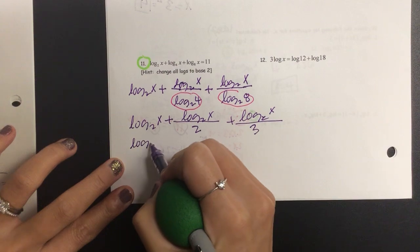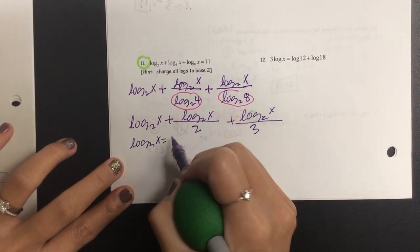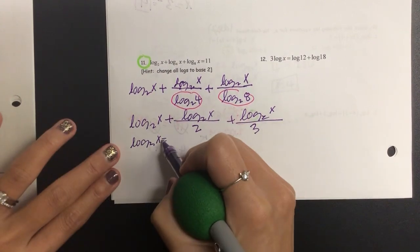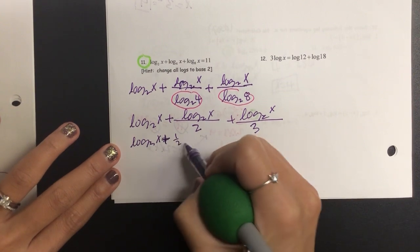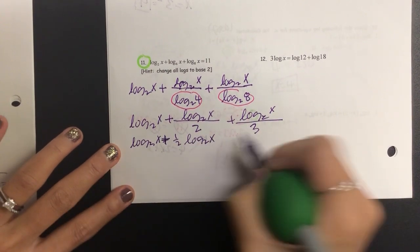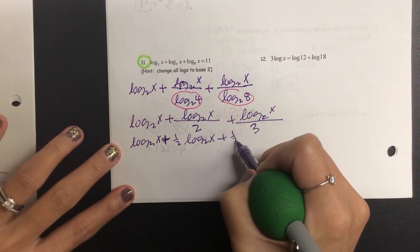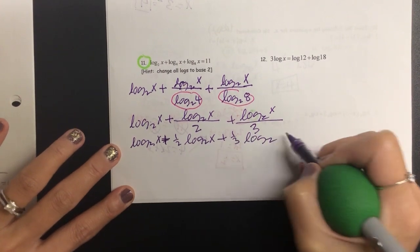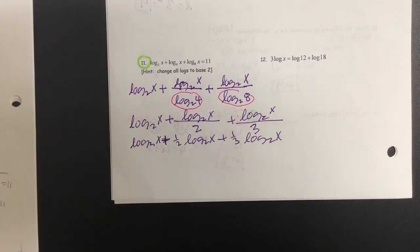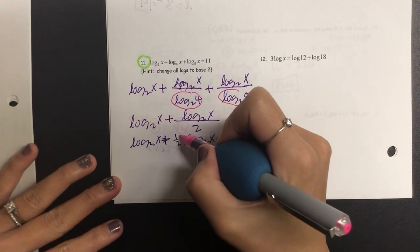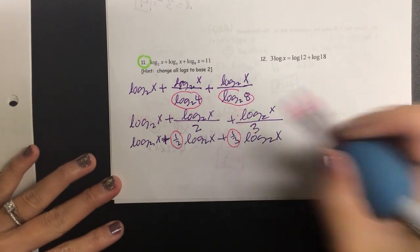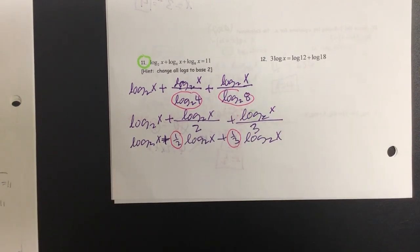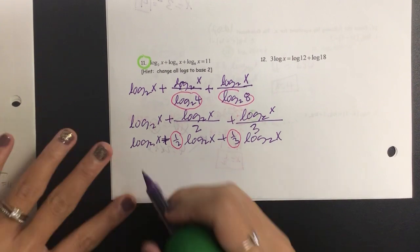Now I'm going to pull this out. One half I'm going to take out and that should be a plus sign, and then we have log base 2 of x. The one third I'm going to take out, log base 2 of x. What do you think I'm going to do to the number one third and one half? Put it as the exponent.